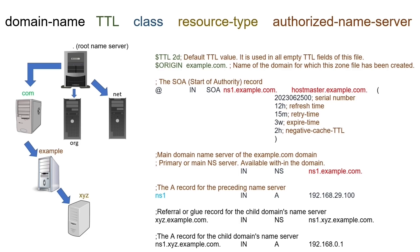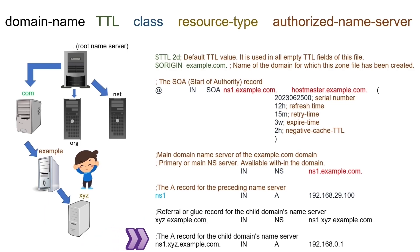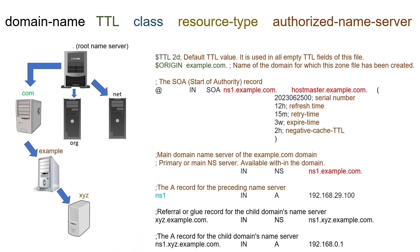For example, if we want to create a referral name server record for the XYZ domain, we will use the XYZ domain's fully qualified domain name here. Since the referred domain is a child domain of this domain, we must also create a host record for it. If we create a glue record without the host record for the child domain's name server, the resolver systems cannot access the child domain's name server.